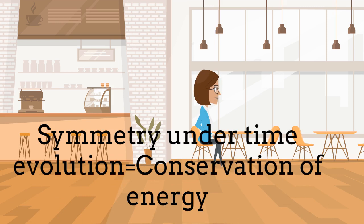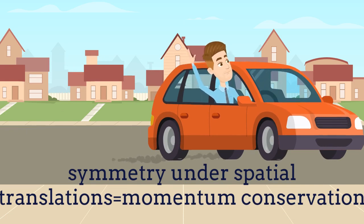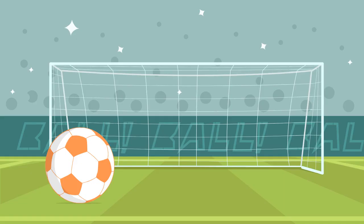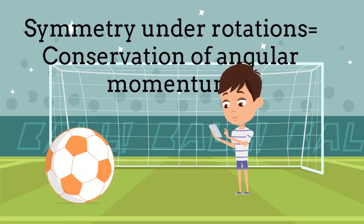When nothing is changing in time, then the energy is conserved. In physics, the invariance or symmetry under time translation is usually connected with the energy conservation. The invariance or symmetry under space translations is usually connected with the momentum conservation. Another example is the symmetry under rotation, which is connected with the angular momentum conservation.